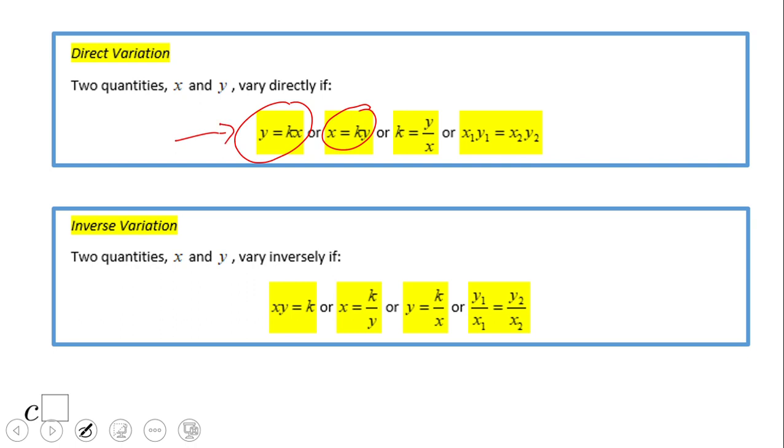Then you can find the k if you know the values by doing the quotient between y and x, and then we have this form which is very useful.